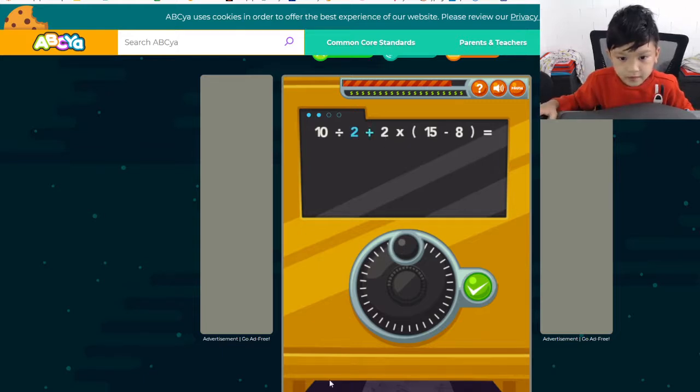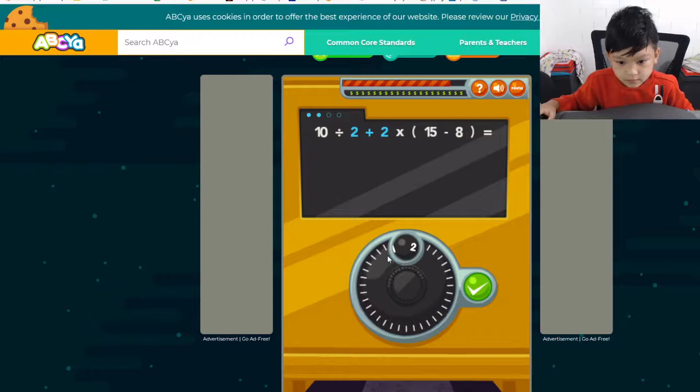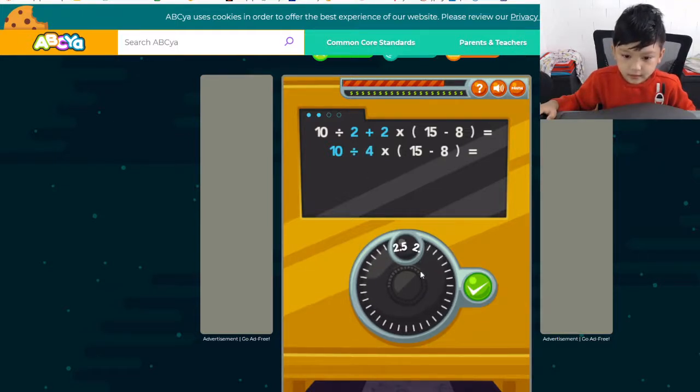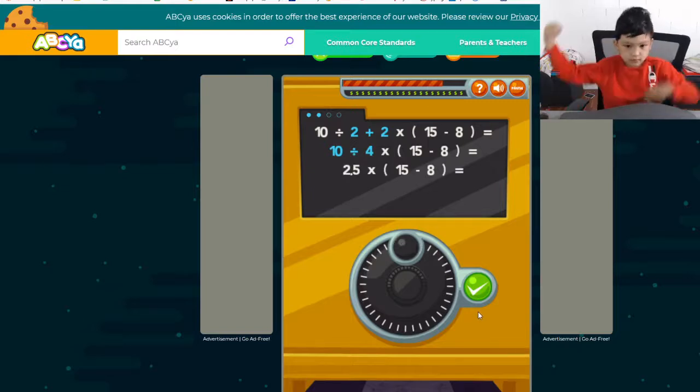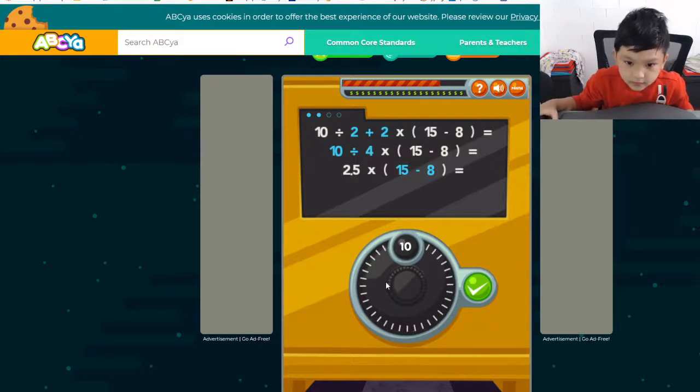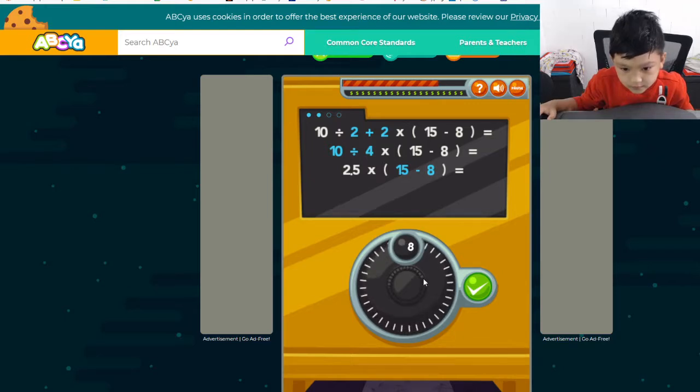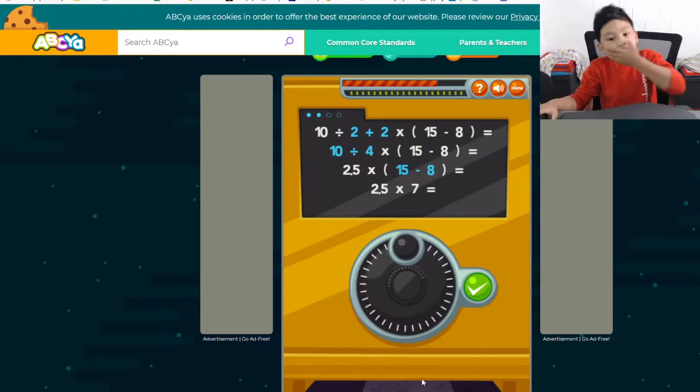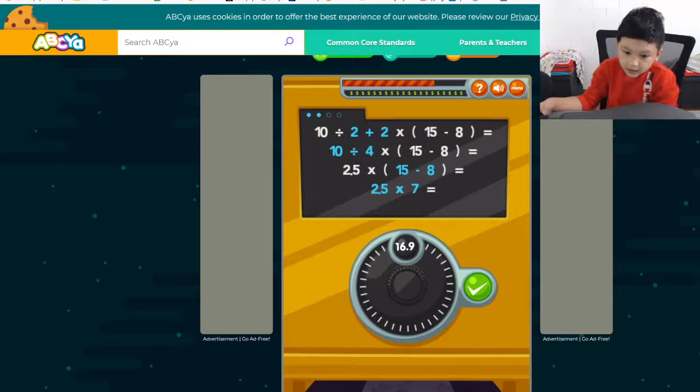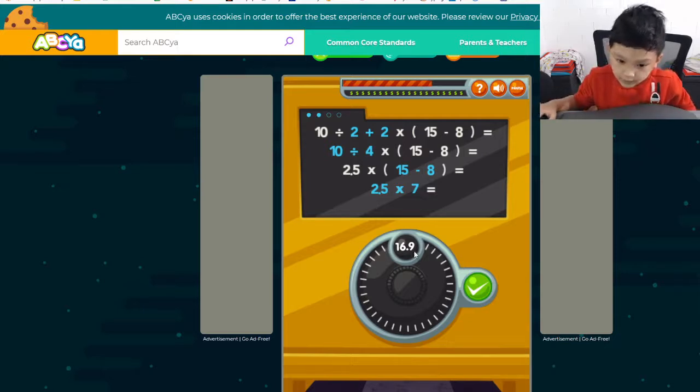2 plus 2. 2.5. And now, let's do 15 minus 8. 2.5 times 7. 7 times 2 is 14. Right. And, half of 7 is 3.5. And, with 14 plus 2.5. 17.5.